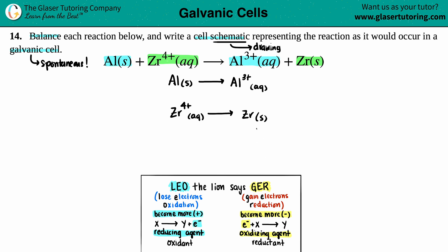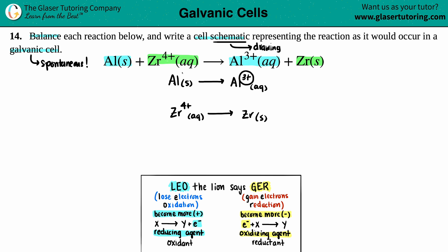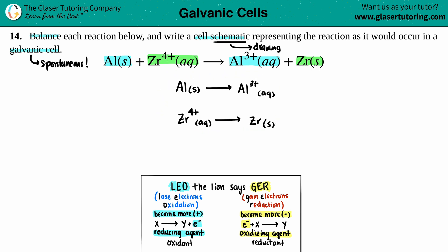Now let's balance these half-reactions. The elements are already balanced — one Al on each side, one Zr on each side. The only thing that needs balancing is the charges. Aluminum solid has no charge, so that's zero, and Al³⁺ has a plus three charge. Zirconium Zr⁴⁺ has a plus four charge overall, and Zr solid has a charge of zero.